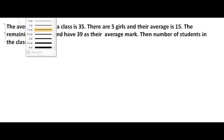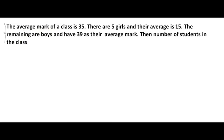The problem given here is: the average mark of a class is 35. There are 5 girls and their average is 15, and the remaining are boys with an average mark of 39. The number of students in the class is what? The class average of 35 is given, and the class is divided into two groups — girls and boys.